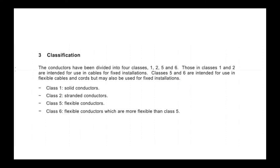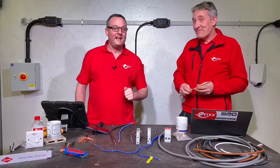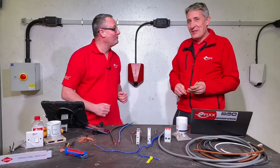Bringing up the slide — class 1 is solid conductors, class 2 is stranded conductors, and both class 1 and class 2 are suitable for use in fixed wiring. Class 5 is a flexible conductor, and class 6 conductors are more flexible than class 5 — just a little bit more flexible, which makes logical sense.